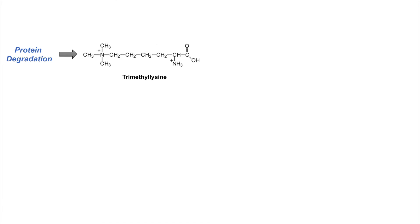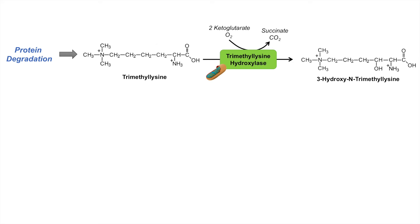Trimethyl lysine is then acted on by trimethyl lysine hydroxylase, an enzyme associated with the mitochondria. Being a hydroxylase, it adds a hydroxyl group to trimethyl lysine to form 3-hydroxy-N-trimethyl lysine. In the process, it utilizes 2-ketoglutarate and oxygen as cofactors, converting them into succinate and carbon dioxide. This enzyme also requires vitamin C (ascorbic acid) and iron as important cofactors.